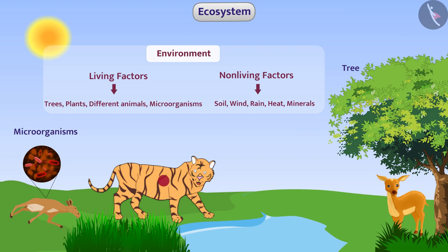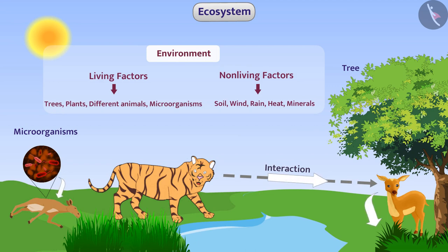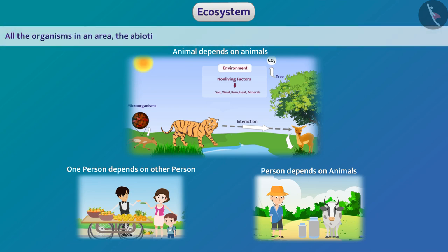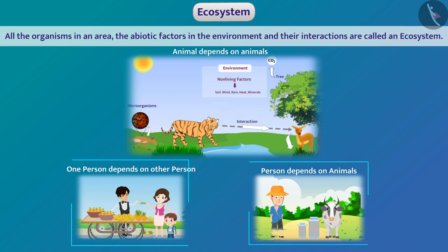No organism can live alone in its environment. To survive, each organism is required to interact with other organisms and abiotic factors around it. For example, various organisms in the forest depend on each other for food and abiotic factors. Every person in a village depends on other people, different animals, and various physical factors. All the organisms in an area, the abiotic factors, and their interactions are called an ecosystem. For example, forests and villages are ecosystems.